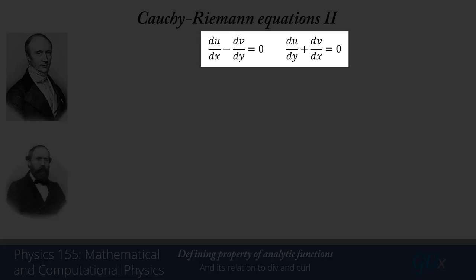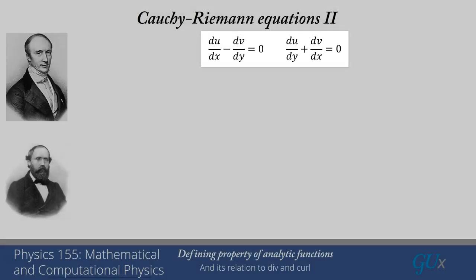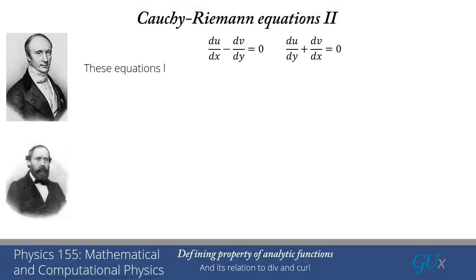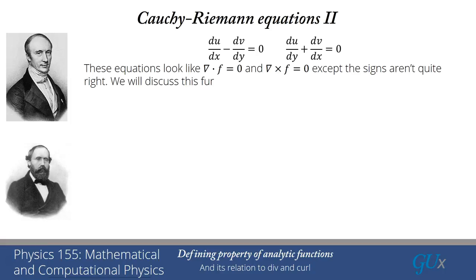Similarly, if we were to look at the z component of the curl, that would be dfx by dy minus dfy by dx. And here we have a plus sign. So these two Cauchy-Riemann equations are very reminiscent of del dot f equals 0 and del cross f equals 0, except the signs aren't quite right. And we're going to discuss this further in the next lecture, where we really get into the details of exactly how this works. The reason why the signs aren't quite right is because of the issues associated with the i factors in the analytic functions.